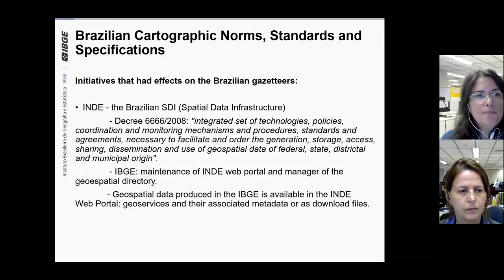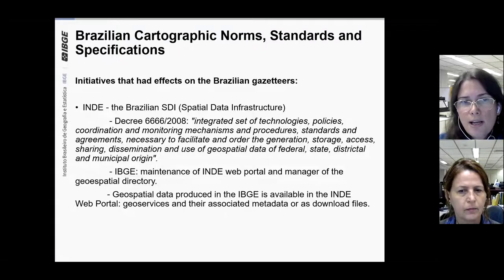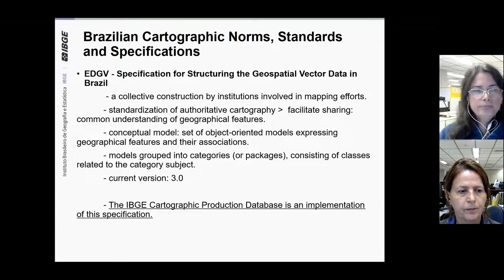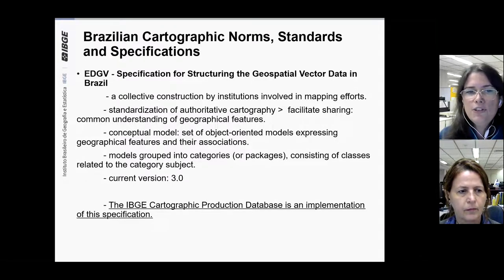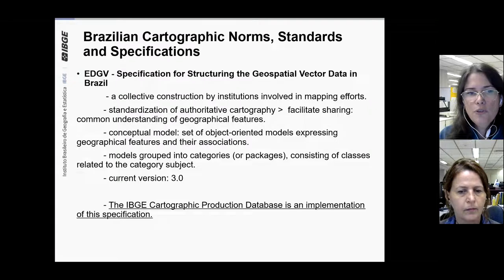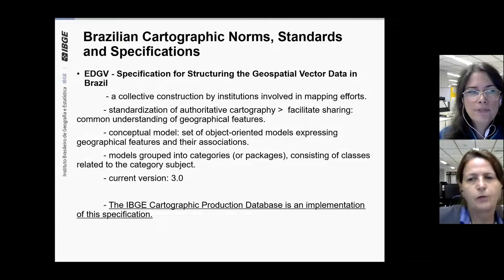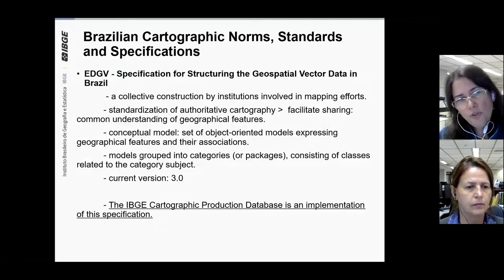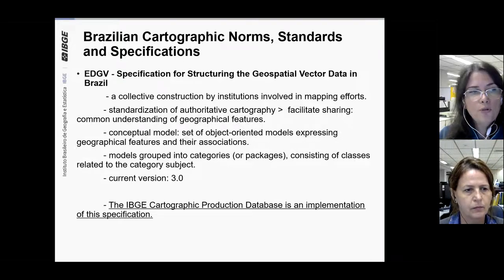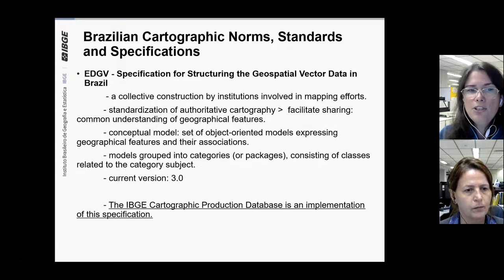Before that, they were made available in the IBGE website. The other standard had a deep effect on the way Brazilian gazetteers are produced. It is the specification for structuring geospatial vector data in Brazil, known by the Brazilian initials EDGV. This specification was a collective construction by institutions involved in mapping efforts and is intended to standardize authoritative cartography and to make sharing easier through a common understanding of geographical features.